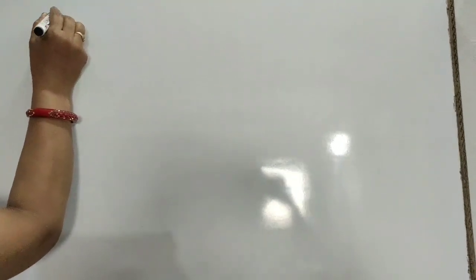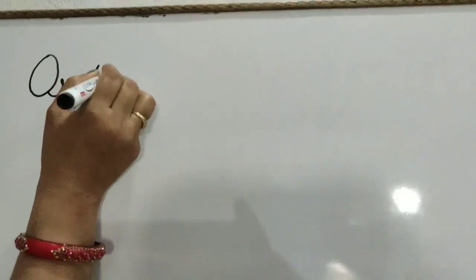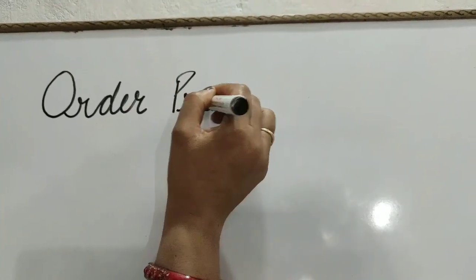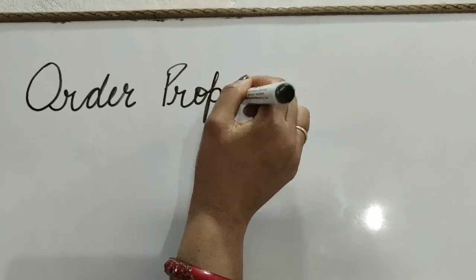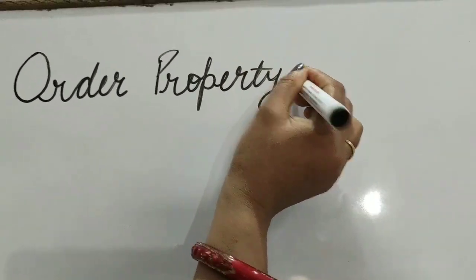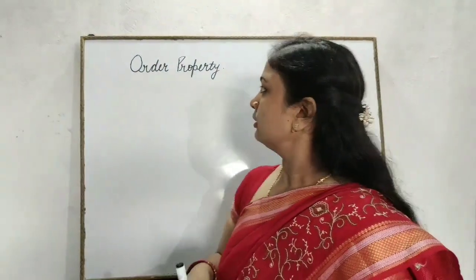Children, today we will solve the question based on property of addition. The first property is order property. The order property says that if we change the order of numbers while adding, the sum or total will not be changed. For example,